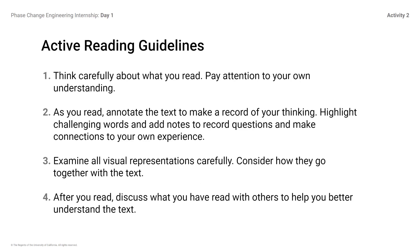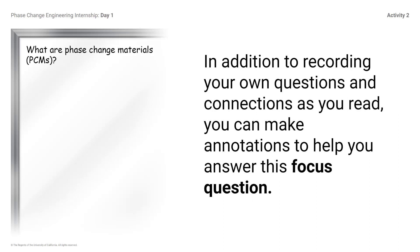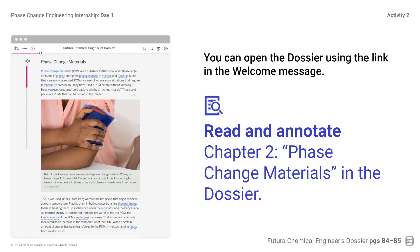Remember active reading guidelines: 1) Think carefully about what you read and pay attention to your own understanding. 2) As you read, annotate the text — highlight challenging words and add notes to record questions and make connections to your own experience. 3) Examine all visual representations carefully and consider how they connect with the text. 4) After you read, discuss what you've read with others to help you better understand. In addition to recording your own questions and connections, you can make annotations to help you answer the focus question: What are phase change materials, or PCMs? You can open the dossier using the link in the Welcome message — read and annotate Chapter 2, Phase Change Materials.